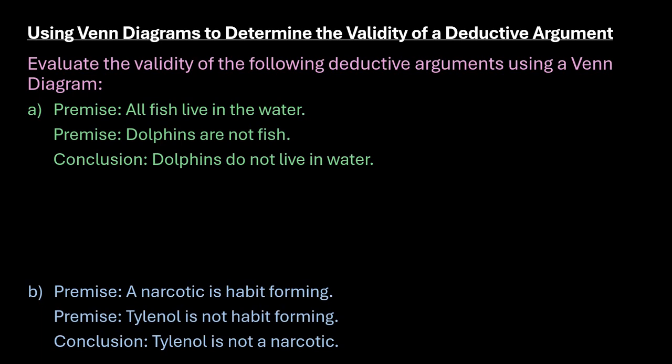So for the first example we have the premise that all fish live in the water. We also have the premise that dolphins are not fish, and we're looking to see does it follow logically that dolphins do not live in water.